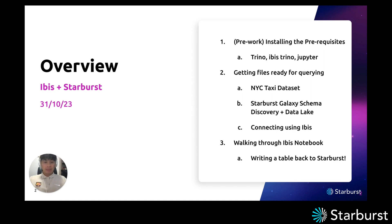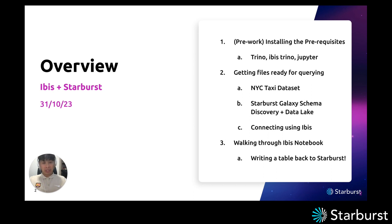Secondly, we'll get some files ready for querying. We'll download the NYC taxi dataset in parquet format alongside a companion lookup table in CSV. We'll use Starburst Galaxy schema discovery on top of your lake to register those tables, and then we'll finally connect to Starburst Galaxy using IBIS. From there, we can go to an IBIS notebook and walk through a full notebook I've created for you today to show some of the power of the two tools.